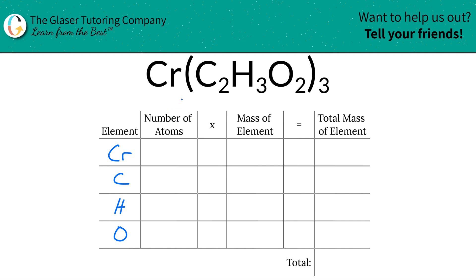Next is to write down the number of atoms of each, and that's where the subscripts come into play. For chromium, there's an invisible one there, so that means there's one chromium atom. For carbon, there's two carbon atoms, but that's in one acetate. You have three of them, three of those acetates. So therefore, you would have a total of six carbons.